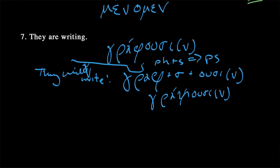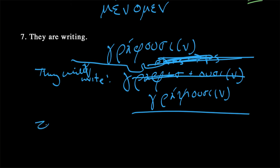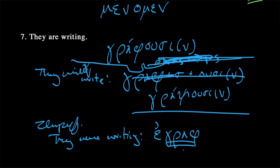Now, let's do the imperfect. They were writing. So, we need that past indicative augment. We use our first principal part stem, graph. And then, we need the third person plural, on. Egraphon. They were writing.